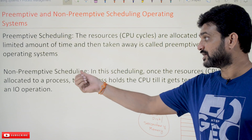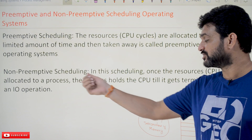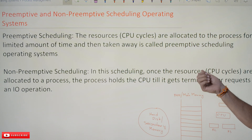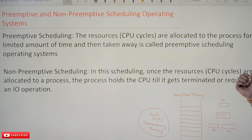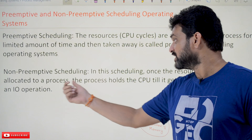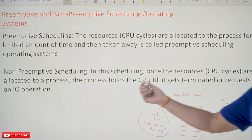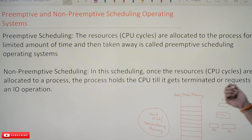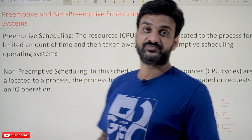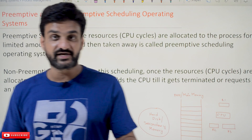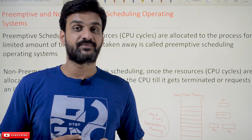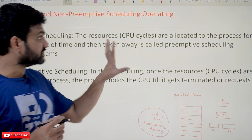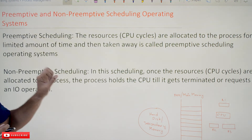In non-preemptive scheduling, once the resources — meaning CPU cycles — are allocated to the process, the process holds the CPU until it gets terminated or requests an I/O operation. That is what we call non-preemptive scheduling in operating systems.